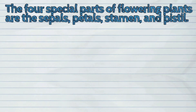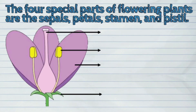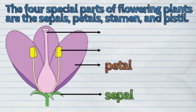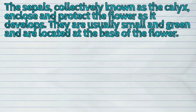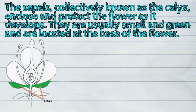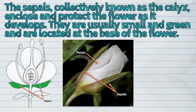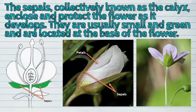The four special parts of flowering plants are the sepals, petals, stamen, and pistil. The sepals, collectively known as the calyx, enclose and protect the flower as it develops. They are usually small and green and are located at the base of the flower.